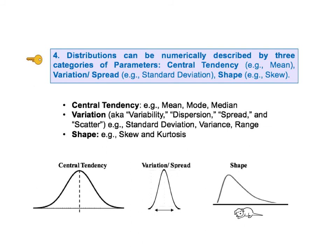Distributions can be numerically described by three categories of calculated parameters. First, there is central tendency, also known as center. This can be specified by a number for the mean, which is also known as the average, or a number for the mode or for the median.